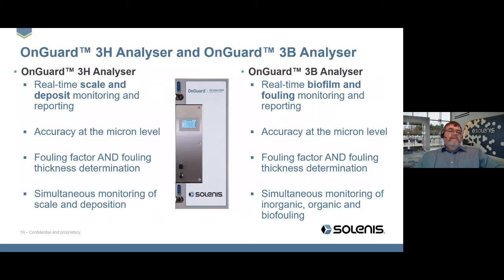The difference between the two units is straightforward. The OnGuard 3H offers real-time scale and deposit monitoring with micron-level accuracy, providing fouling factor and fouling thickness determination automatically, with simultaneous monitoring of scale and deposition. The 3B goes a step further — it gives real-time biofilm and fouling monitoring and reporting with the same micron-level accuracy, and can simultaneously monitor inorganic, organic, and biofouling with the same piece of equipment.